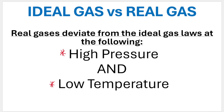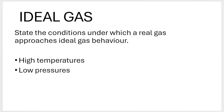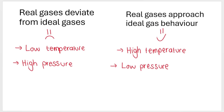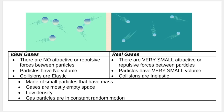So again, when pressure is very high and temperature is very low, the real gas no longer acts like an ideal gas. The flip side is that real gases behave like ideal gases when temperatures are higher and pressures are lower. Summary: real gases deviate from ideal gas behavior at low temperatures and high pressures; real gases approach ideal gas behavior at high temperatures and low pressures — basically opposite scenarios.